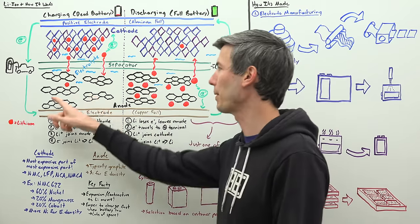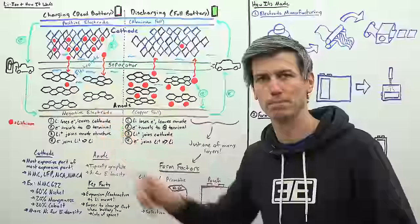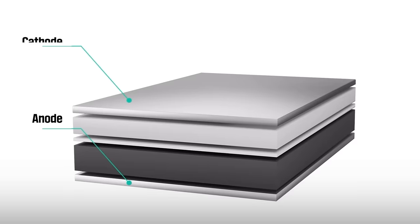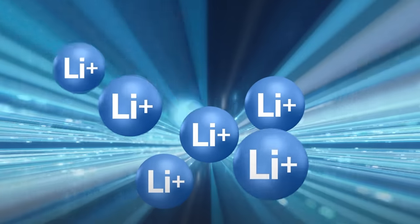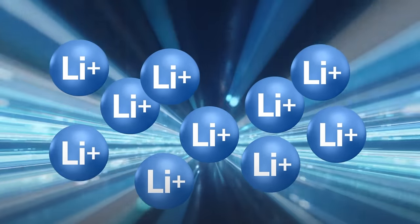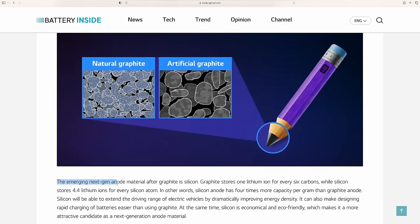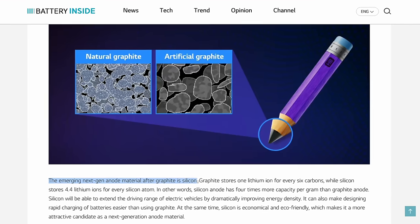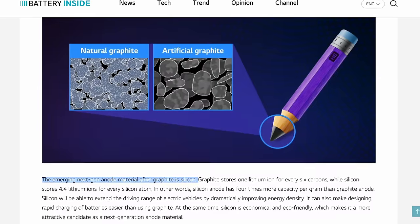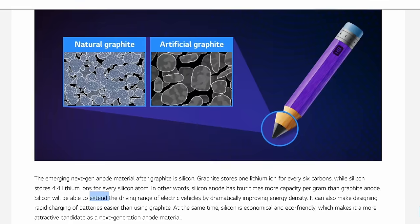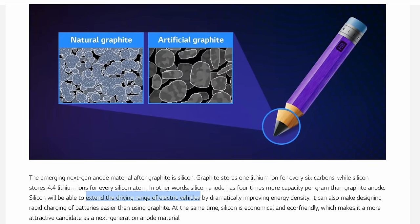We also have the anode, which is typically made up of a graphite structure. This is great for storing and exchanging lithium, but there are materials that can store even more lithium, like silicon. Because of this, silicon is currently being used in anode chemistries, but it has its own challenges, as it tends to have significant expansion and contraction as the lithium moves to and from the anode.